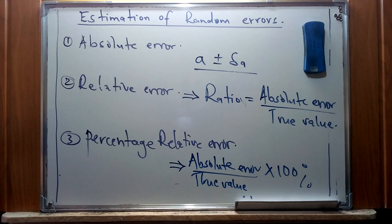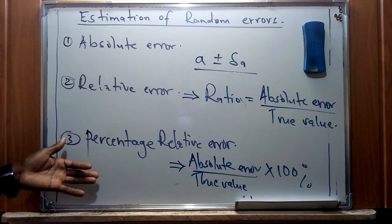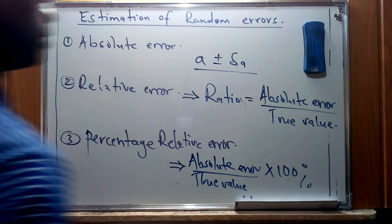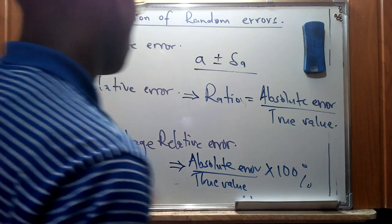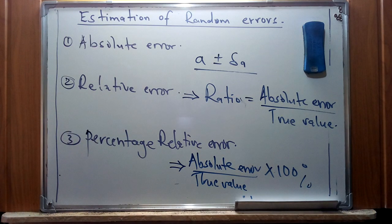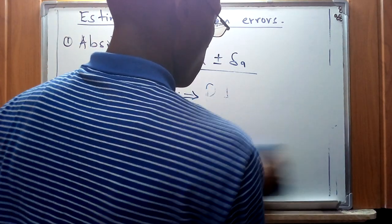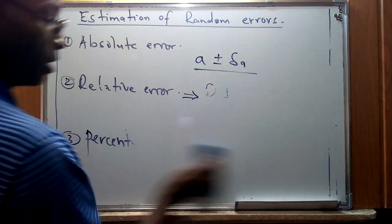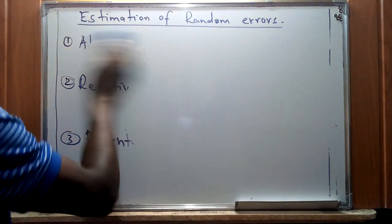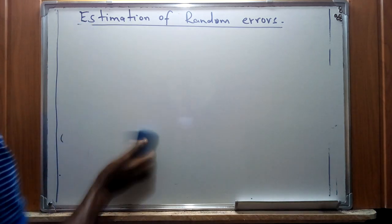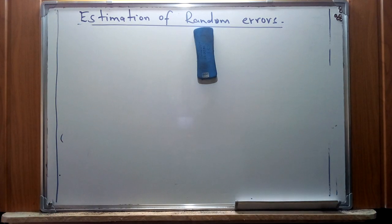Next, we are going to look at propagation of errors. These are methods used to determine errors in values where the values are created using two or more values with estimated errors. We will discuss this in our next video. That video will also cover specific operations on these errors using examples. That is it for now — catch us in our next video.